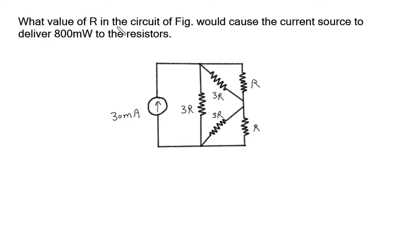What value of R in the circuit of figure would cause the current source to deliver 800 mW to the resistors?